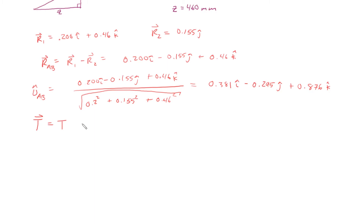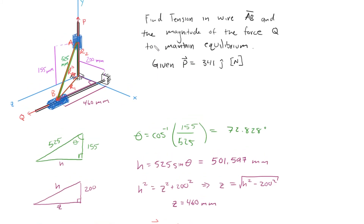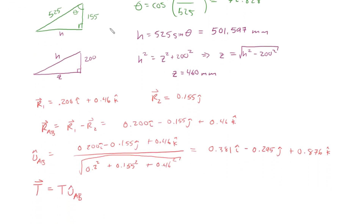The tension force T equals the magnitude of T times the unit vector UAB. The next step is to draw free body diagrams for bodies A and B, and use the static equilibrium equations to relate the tension force to Q and P so we can find both Q and T. We'll start with the free body diagram for A.